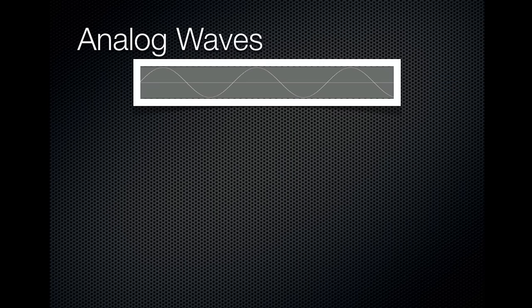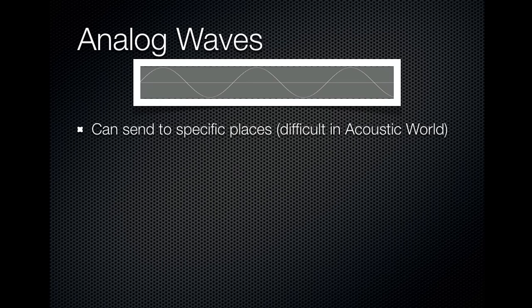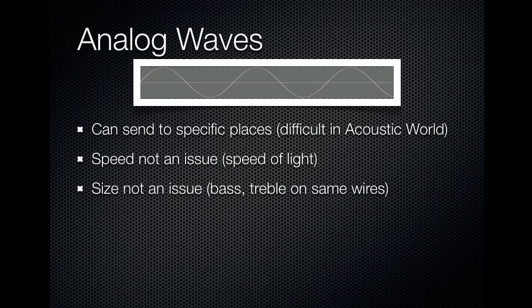Waves in the analog domain. The advantages of using the analog domain over the acoustic domain is that you can send the waves to specific places — it's very hard to do this in the acoustic world. In the analog domain, speed is not an issue at all. You don't have to worry about the percussionists in the back of the orchestra having to play a little bit ahead of the beat in order to arrive at the audience's ears at the same time as the violins in the front. Size is not an issue either — we can carry all of those sounds on the same size wires.